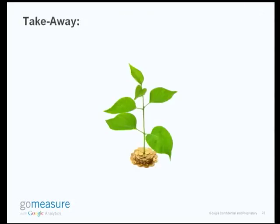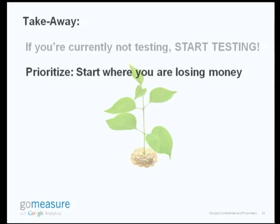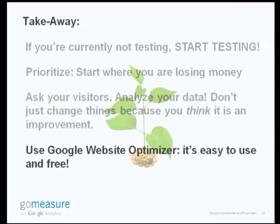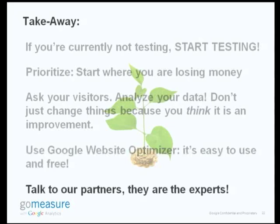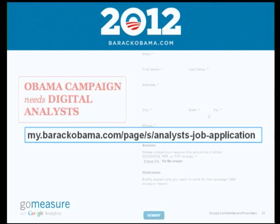So to summarize the key takeaways: if you're not testing, you really need to start. If you don't know where, start where you're losing money — identify where on your site you're actually losing money. Ask your visitors, use your GA data and analytics data to figure out where to make changes. Use our tool — it's free, it's simple to use, and you can talk to our partners who are experts at this. And if you're looking for a job, Obama is actually hiring a team of experts for his re-election campaign to help him test — that's how important this is. Thank you very much.